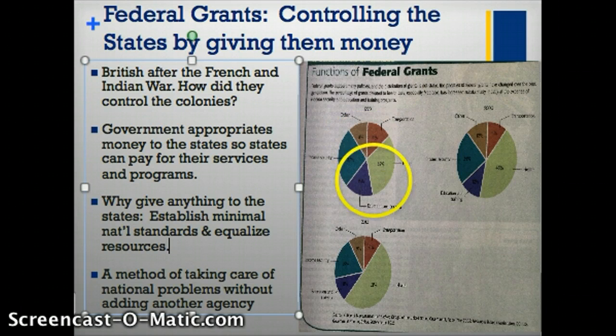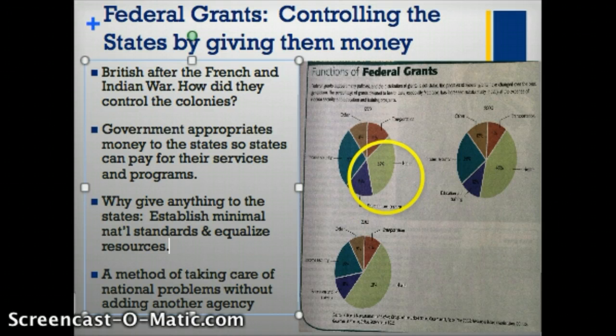If you can see this chart — it's a little blurry and I'll show it to you in class — the green line is healthcare, and this shows the percentage of the grant pie the national government gave the states for healthcare.